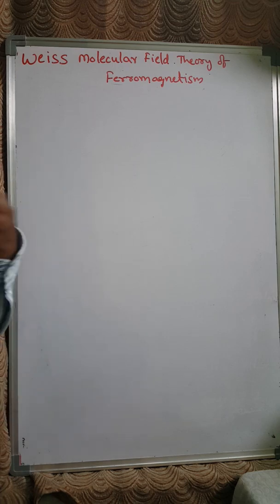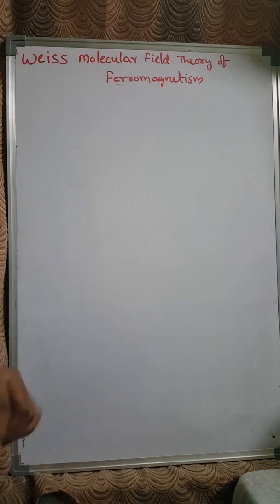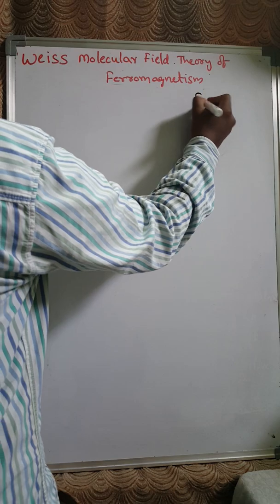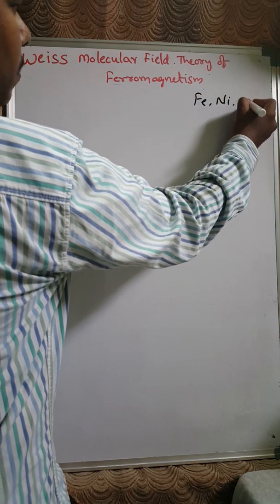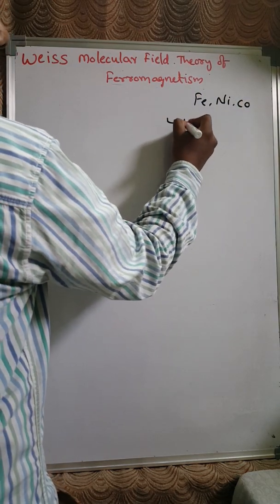We are going to discuss the molecular field theory of ferromagnetism. We know ferromagnetic materials show spontaneous magnetization — that means in the absence of an external applied field, materials like iron, nickel, and cobalt exhibit magnetic behavior.